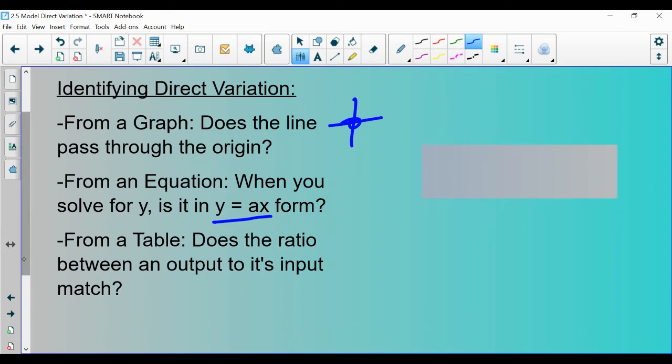And then from a table, what you're going to do is you're going to divide the output by its input. So if you're going to be given a table, you have x's and y's. If you took the outputs and divided it by its input, so this number divided by this number, this number divided by this number, and so on. If it matches, it is direct variation.